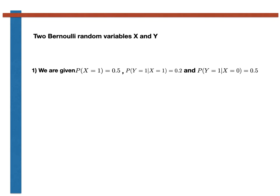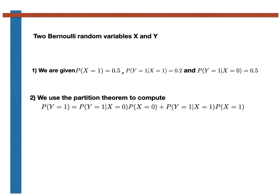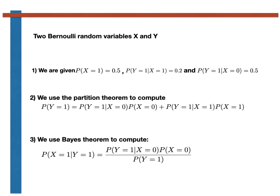Given the information in the question, you can use the partition theorem to compute the probability that Y equals 1. The question then finishes by using Bayes' theorem to calculate the conditional probability that X equals 1 given Y equals 1. This is the end of the problem.